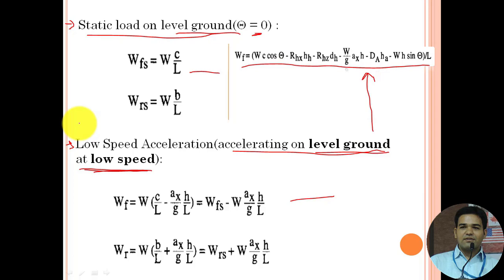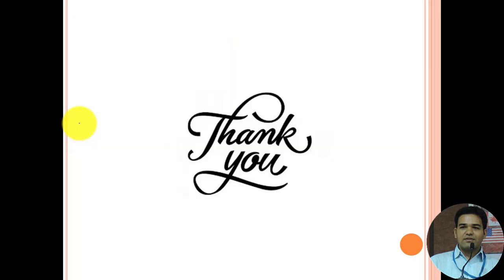Once we have the dynamic axle loading condition, we can use Newton's second law to calculate the tractive effort produced by the vehicle. With the tractive effort known, we can easily predict both the acceleration performance and the braking performance of a vehicle. Thank you for watching — please don't forget to subscribe to this channel.